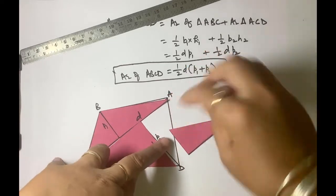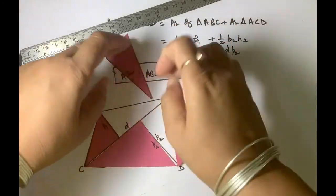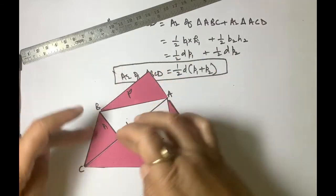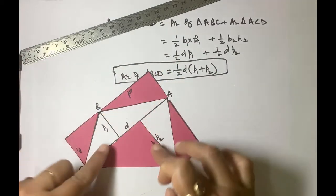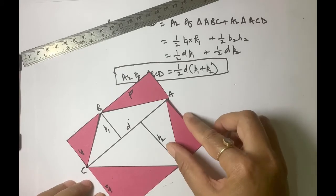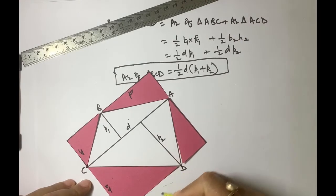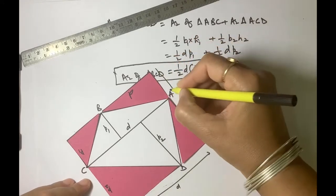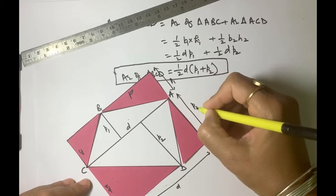Now if we rotate and adjust these figures, these pieces, what we get is a rectangle. Length of rectangle is equal to D and breadth is equal to P1 plus P2.